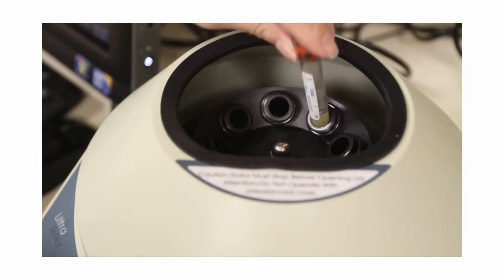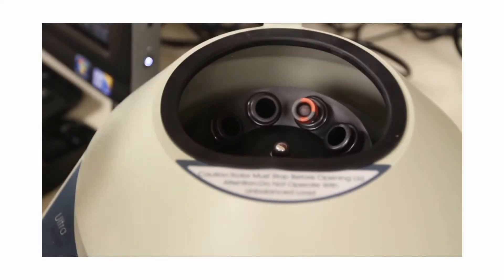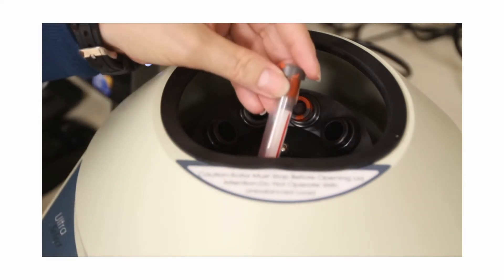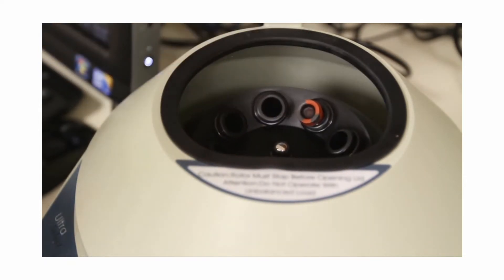Clotted blood cells in a red-topped tube can be separated from the serum by placing the tube into a machine called a centrifuge and allowing it to spin for five to ten minutes.